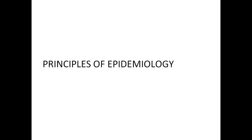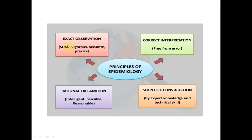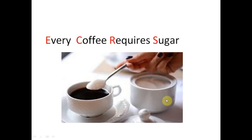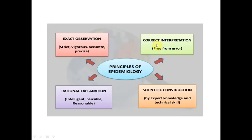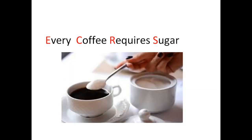Now the principles of epidemiology — there are four principles: exact observation (we need to strictly and accurately take observations, free from error), correct interpretation, rational explanation (scientific, reasonable, and intelligent), and scientific construction (based on knowledge and technical skill). A useful acronym is ECRS — 'Every Coffee Requires Sugar' — standing for Exact observation, Correct interpretation, Rational explanation, and Scientific construction. We are going directly into morbidity measures, skipping mortality.